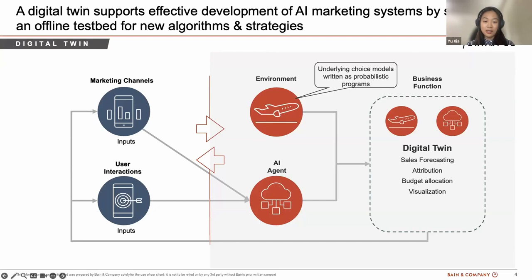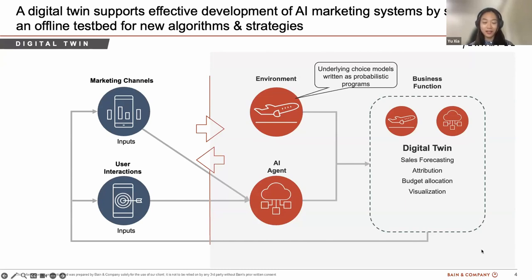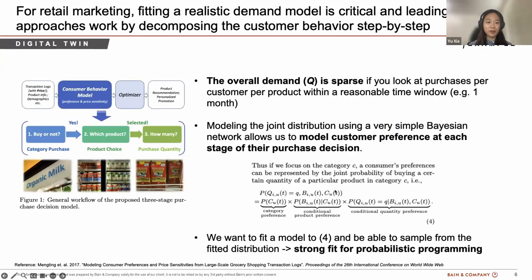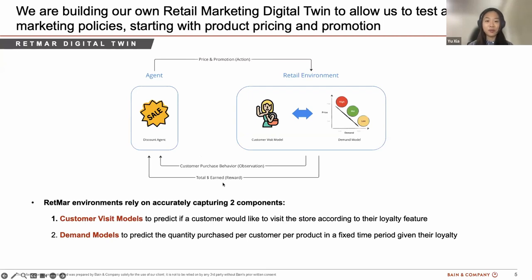The place I want to highlight where probabilistic programming fits is in how we construct the environment. We can construct the environment probabilistically because every purchase decision made by the customer involves some degree of uncertainty. I also want to dive a bit deeper into the work we're currently implementing. Marketing strategy is quite a large topic, so our team decided to start from a small aspect and narrow our focus to optimized product pricing — specifically discount optimization.